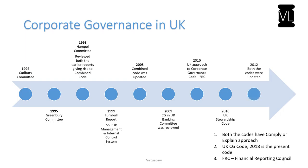In 2012, both the UK Corporate Governance Code and the UK Stewardship Code were updated. A general note across the entire timeline is that both codes share the same approach, which is 'comply or explain.' The UK Corporate Governance Code 2018 is the present code currently in force.